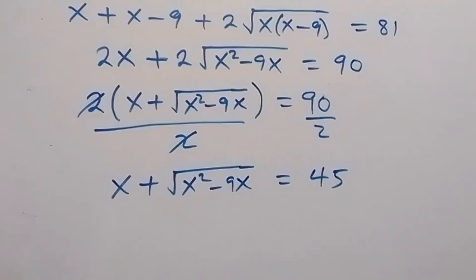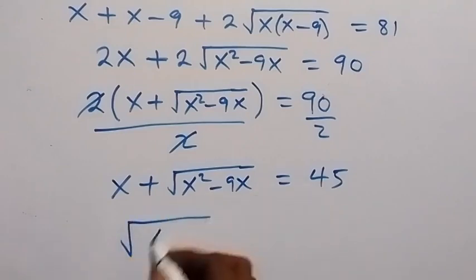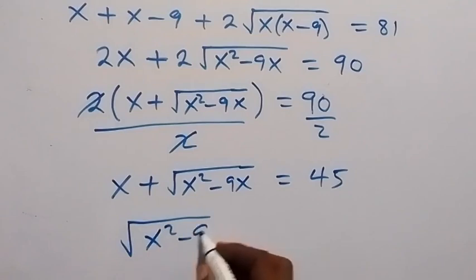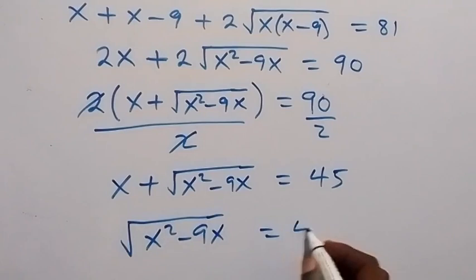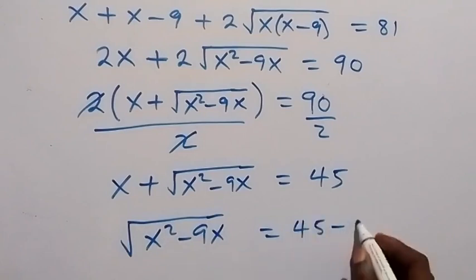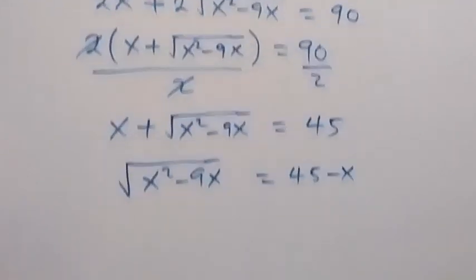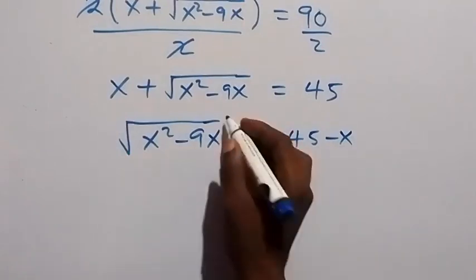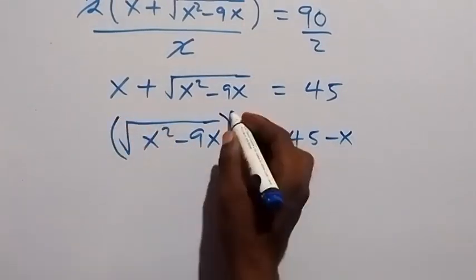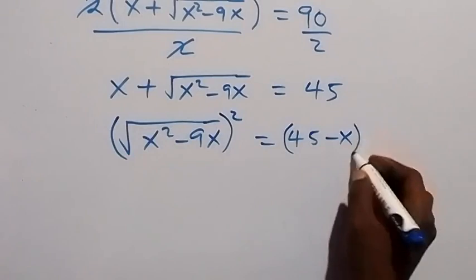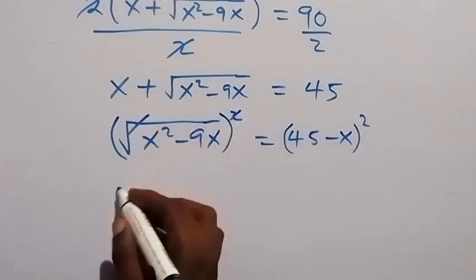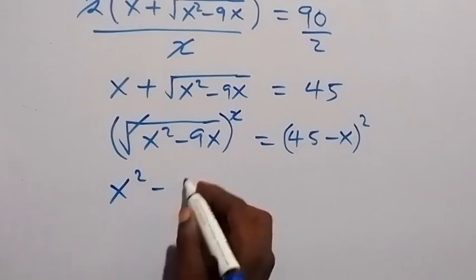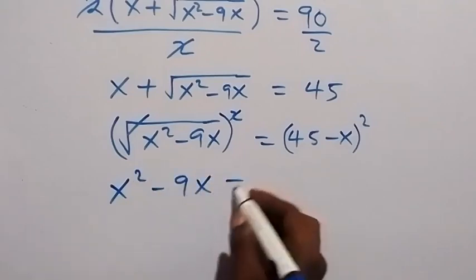We take x to the other side, so root of x squared minus 9x equals 45 minus x. Squaring both sides, the square cancels the square root, giving us x squared minus 9x equals 45 minus x squared.